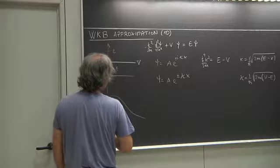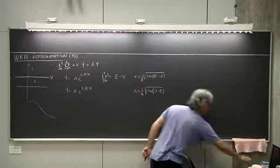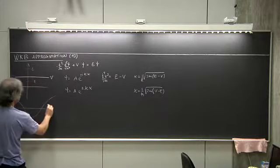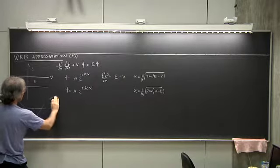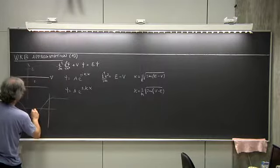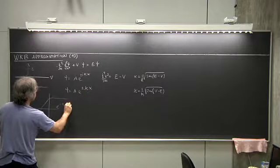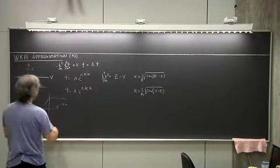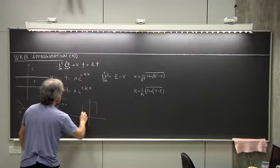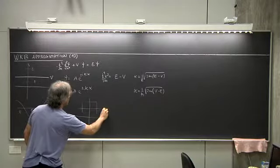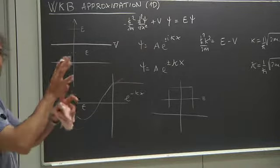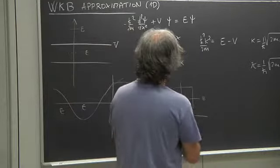The exponentially increasing wave is never allowed in any infinite region of space. It is allowed only in finite regions — for instance, a finite barrier where E is less than V. In that finite region, both solutions are allowed, and you should include them with two coefficients, do matching, and so on. This is the situation we have discussed so far, and all of it is for a perfectly constant potential.